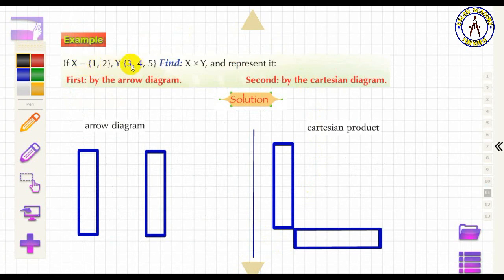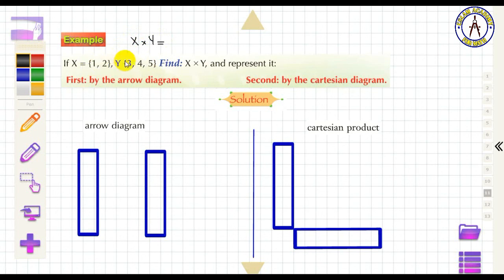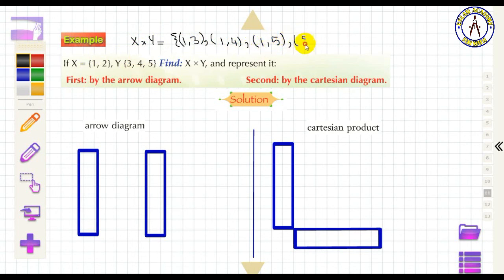Example: X = {1, 2}, Y = {3, 4, 5}. Find X × Y and represent it by an R-diagram and Cartesian diagram. X × Y = {(1,3), (1,4), (1,5), (2,3), (2,4), (2,5)}.